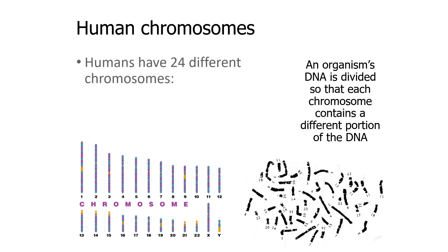We have 24 different chromosomes. You can see they're labeled number 1, 2, 3, 4, all the way up through 22 — that's the first 22 — and then X and Y, which makes 24 different chromosomes. All of the DNA that makes us human is divided up amongst these 24 chromosomes, so each chromosome has a different, unique part of DNA that makes us who we are.